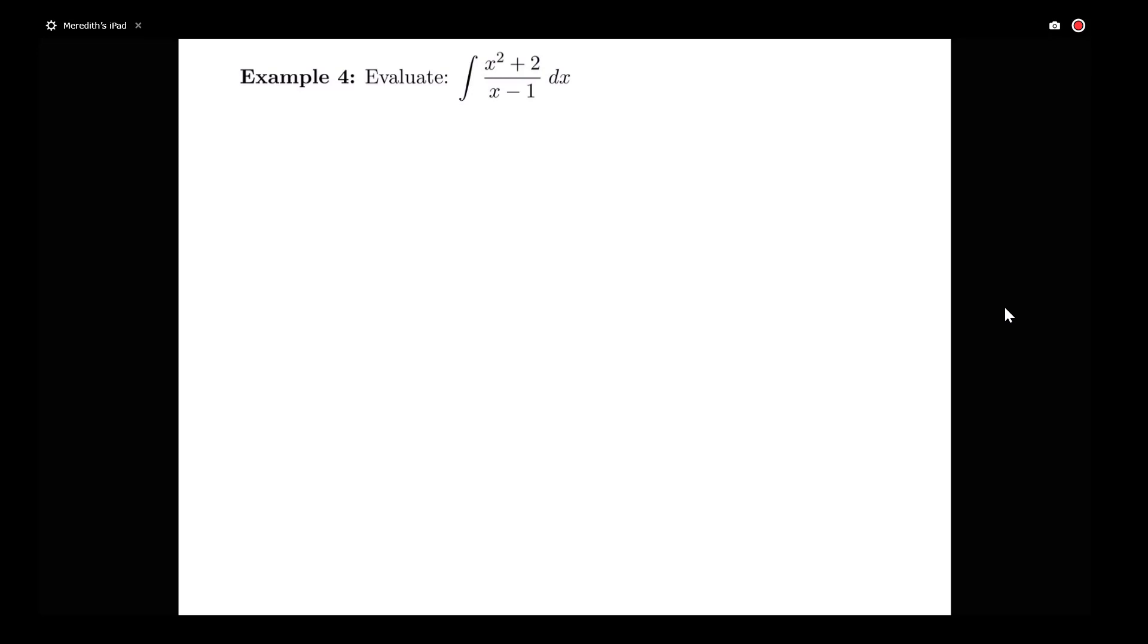This is a little bit different than the example we had before. I have a higher degree term in my numerator than in my denominator. So this numerator is degree 2, and this denominator is degree 1.